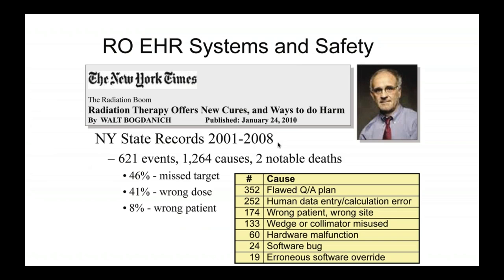In New York, from 2001 to 2008, they reported 621 events with two notable deaths resulting from that. There are situations where you have near-miss events, and several causes: a flawed quality assurance plan, or just an error in inputting data. Imagine you want to do a treatment plan and you put in 60 gray instead of 30 gray — you do the treatment calculation and there's nobody to check. That can lead to an error. Even worse, sometimes you may treat the wrong patient, using a complete treatment plan intended for a different patient. That happens more often than you can imagine.